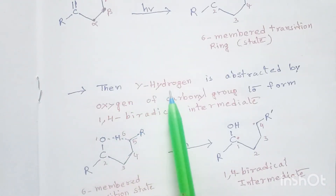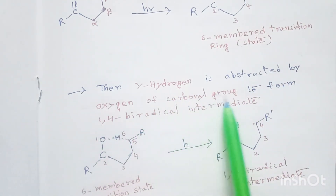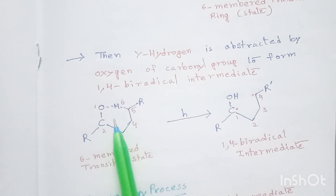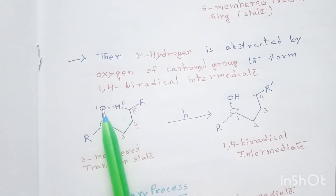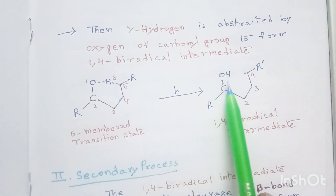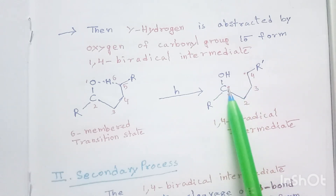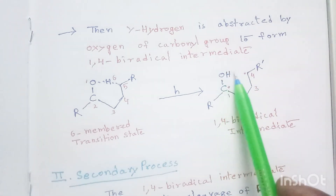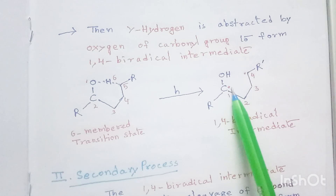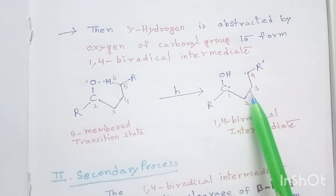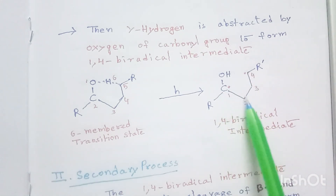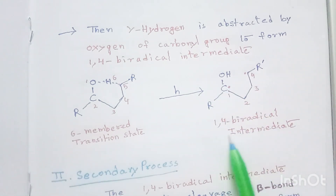Then the gamma hydrogen atom is abstracted by the oxygen of the carbonyl group to form a 1,4 biradical intermediate. When this hydrogen atom is abstracted by the oxygen atom, a radical is formed on this gamma carbon and a radical is found on this carbon. As a result, we get a 1,4 biradical — first carbon, second carbon, third carbon, fourth carbon. This is the 1,4 biradical intermediate. This is the primary process.